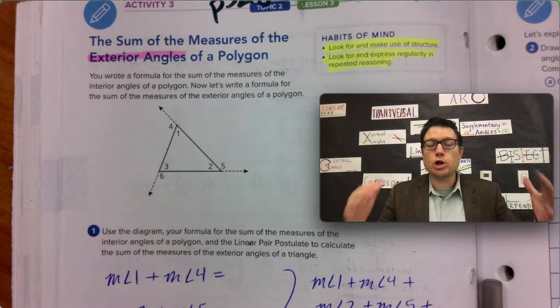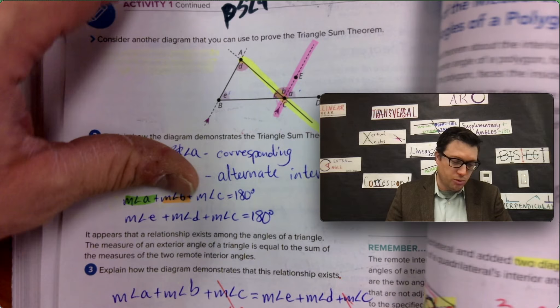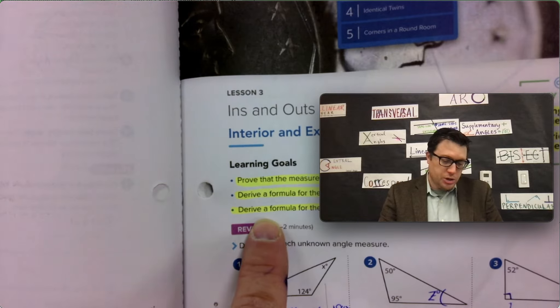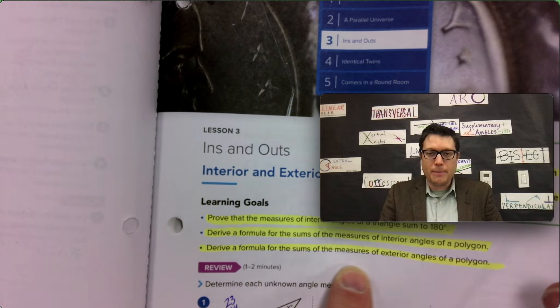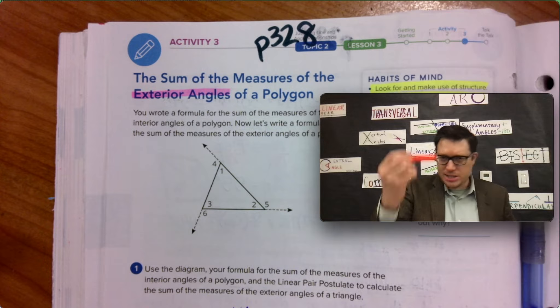Habits of mind. We're going to look for and make use of structure. We're going to express regularity in repeated reasoning. And this is directly related to the learning target from page 319, derive a formula for the sums of the measures of exterior angles of a polygon. In fact, we're going to see a very common number result. Here's what an exterior angle is. Take your highlighter out here.